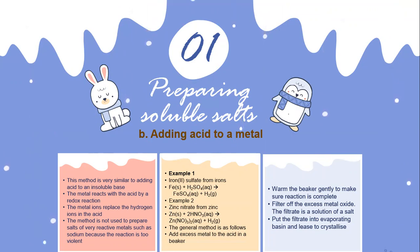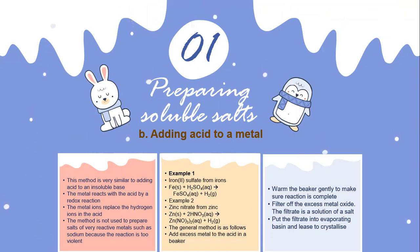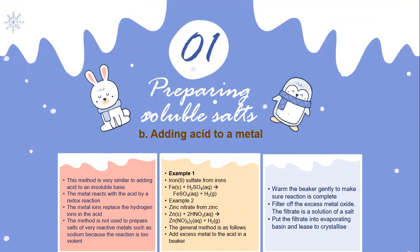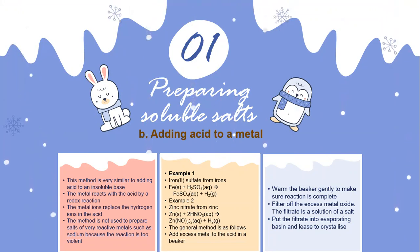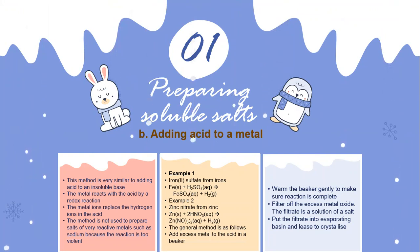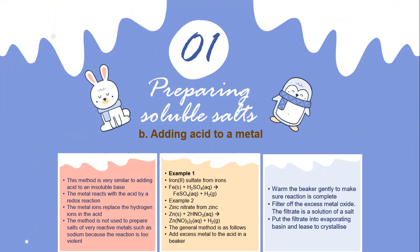Example 1: iron sulfate from iron. The equation is Fe + H2SO4 → FeSO4 + H2 (gas). Example 2: zinc nitrate from zinc. The equation is Zn + 2HNO3 → Zn(NO3)2 + H2. The general method is the same as for the insoluble base.